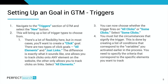Once you've selected click all elements, you can choose whether the trigger fires on all clicks or some clicks. Since we don't want to track every single click anywhere on the website, you're going to want to select some clicks. You'll then see options for specific circumstances that signify the trigger, created by a list of conditions that correspond to the variables we activated earlier. You need to specify the criteria that correspond to the specific elements you want to track.